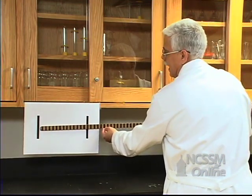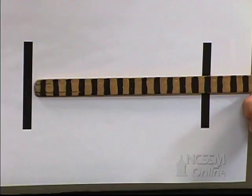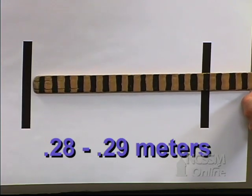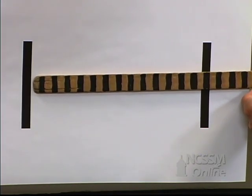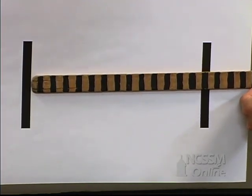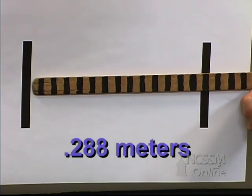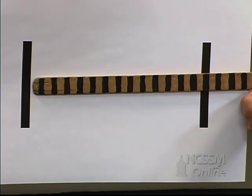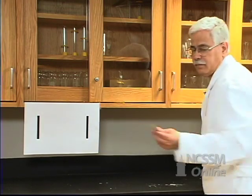If we read our length now, we know that we're between 0.28 meters and 0.29 meters. So we have two certain figures, 0.28, and one estimated figure, which I'll say is 0.008. So our distance is 0.288 meters. We have three significant figures, two certain, the 0.28, and one estimated, the 0.008. The number of significant figures you have is really determined by the calibrations on your instrument.